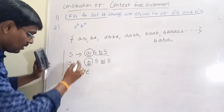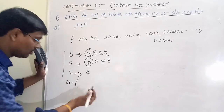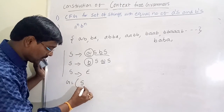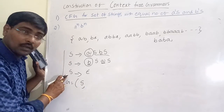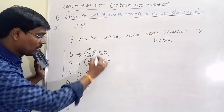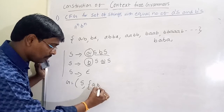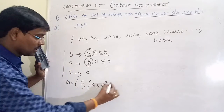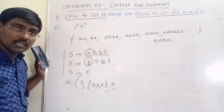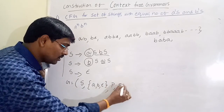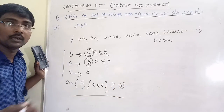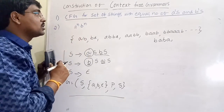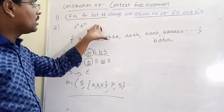The formal grammar G equals (V, T, P, S) where V contains only the non-terminal S, T contains terminals a, b, and epsilon, and the production rules are S → aSb | bSa | ε. The start symbol is S. This is the grammar for equal numbers of a's and b's with no order constraint.